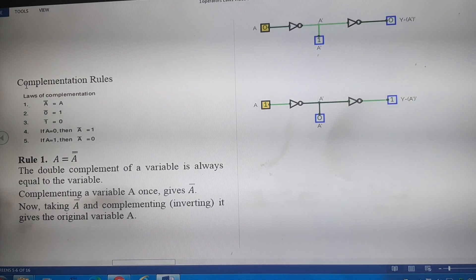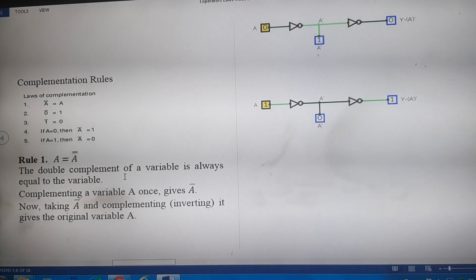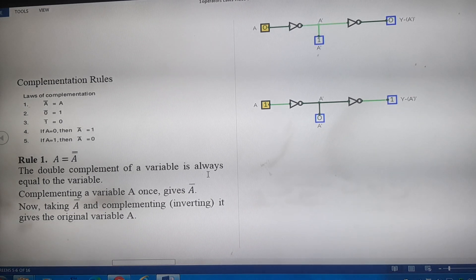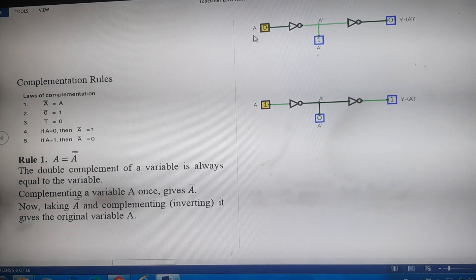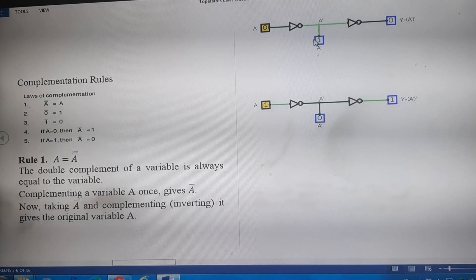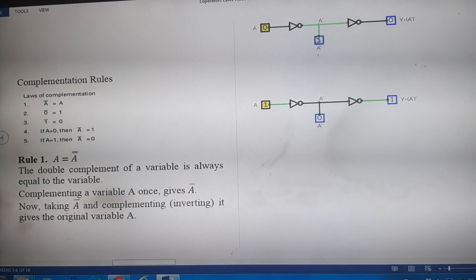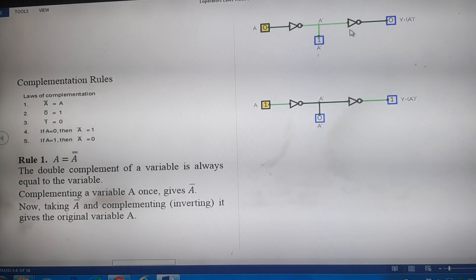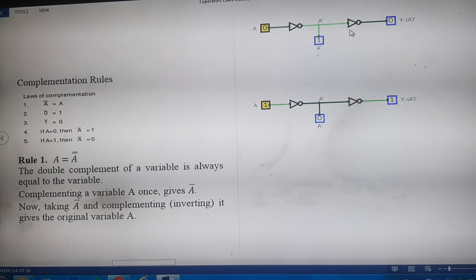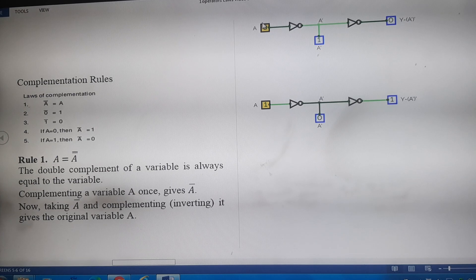These are the complementation rules. Rule 1: the double complement of a variable is always equal to the variable. If A is assumed to be equal to 0, then its complement denoted by A' comes out to be 1. Now if we complement this A' and pass it through an inverter NOT gate, then we get the output 0 which is equal to A.